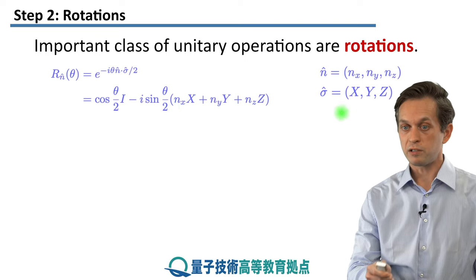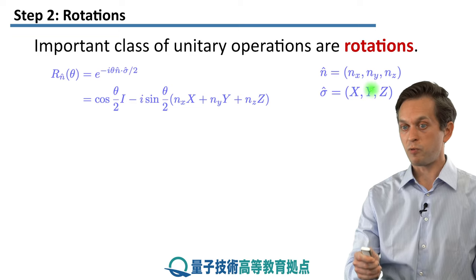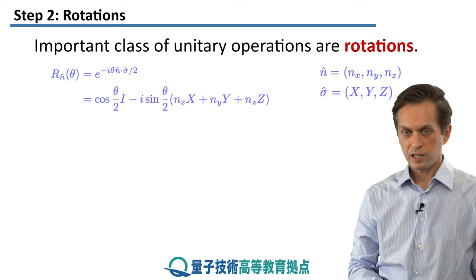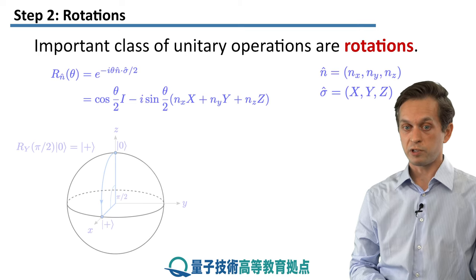This exponent, this exponential, decomposes into cosine θ/2 times the identity matrix, minus i times sine θ/2. And then this expression, which is just the dot product between these two vectors. So we multiply nx by Pauli matrix X, plus ny times Pauli matrix Y, plus nz times Pauli matrix Z. It does look a little bit complicated, but in the Bloch sphere representation, it becomes very, very clear what's going on.